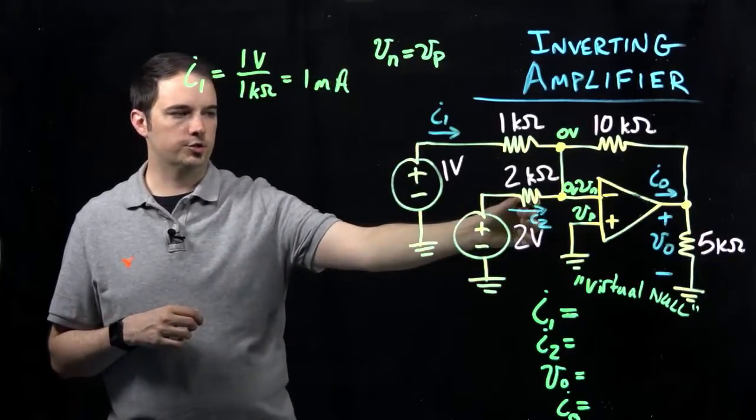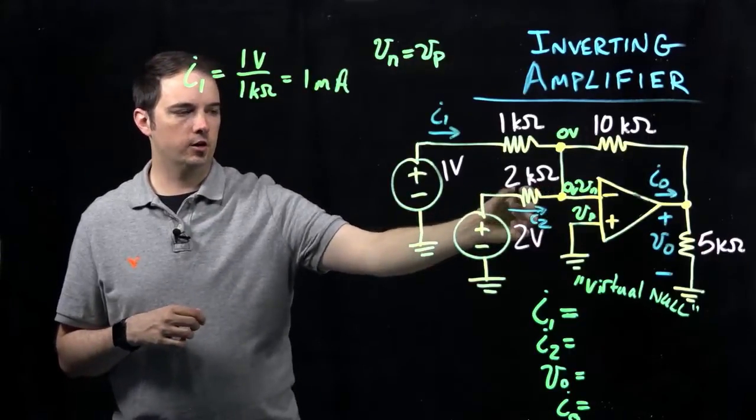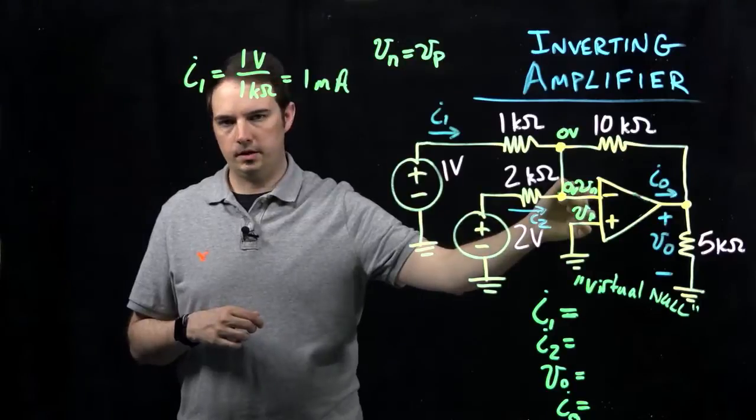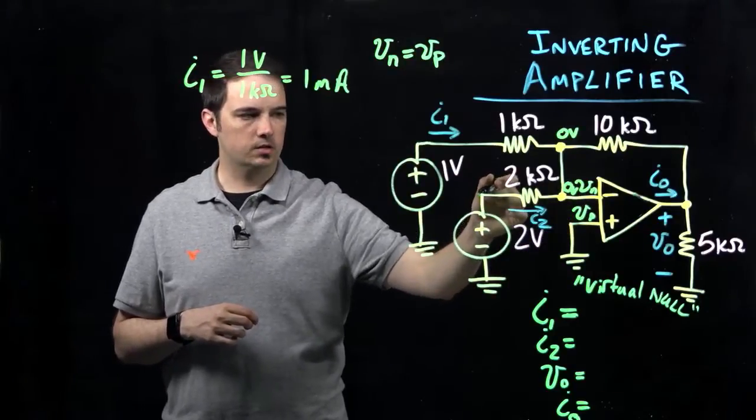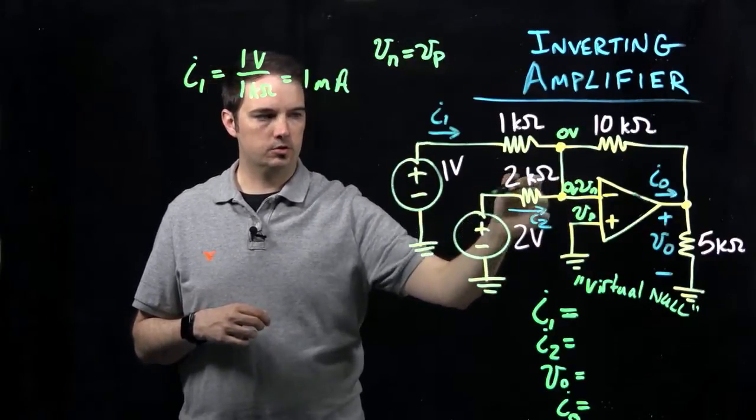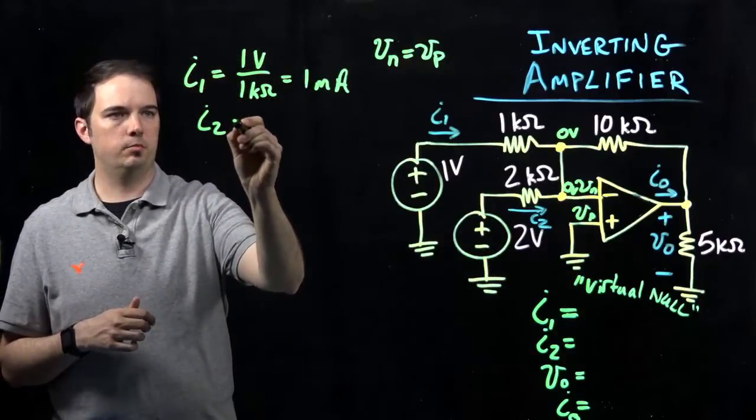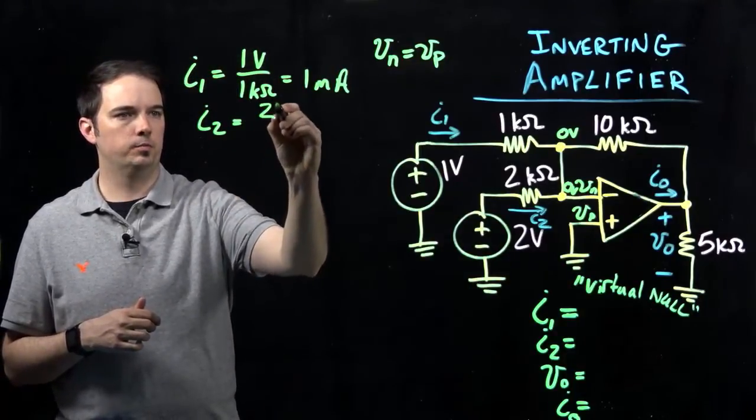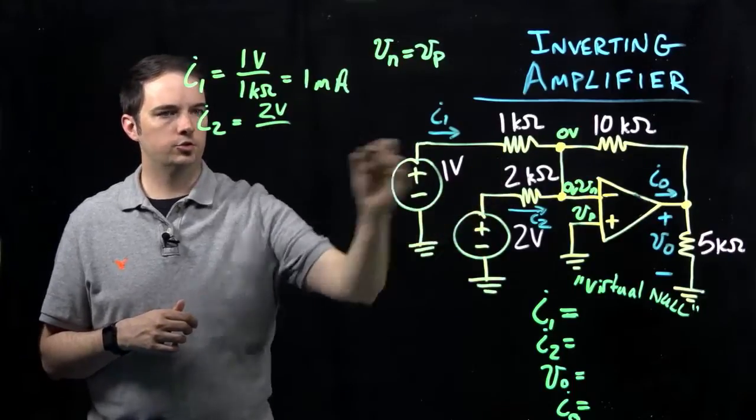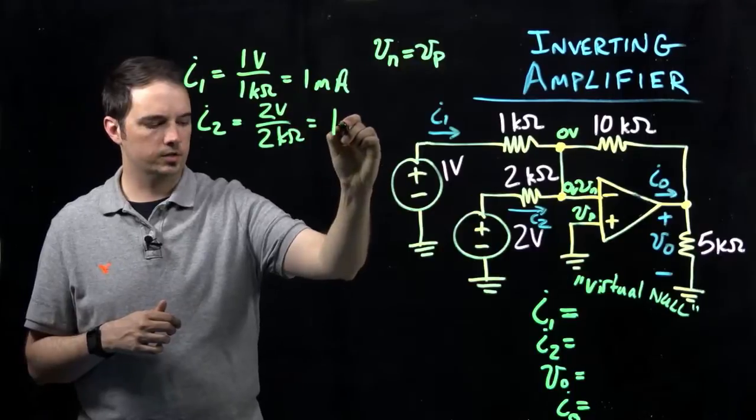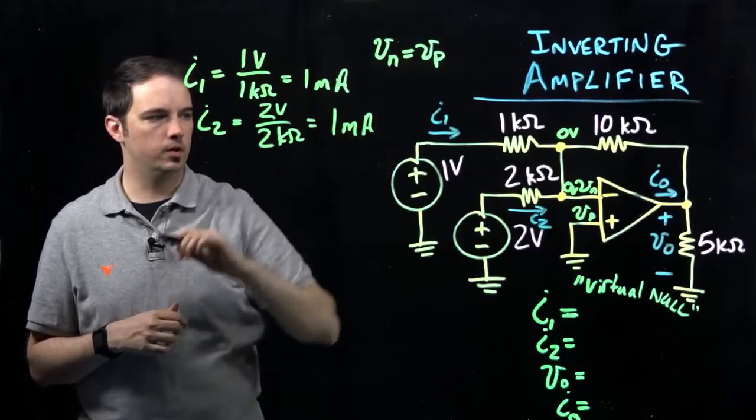Similarly for I2, along the lower branch here, we see an increase of two volts that has to drop back down to zero. Therefore, those two volts from this source are going to be entirely dropped across that two kiloohm resistor. Setting up a similar equation, this is two volts over two kiloohms, giving us again a current of one milliamp.